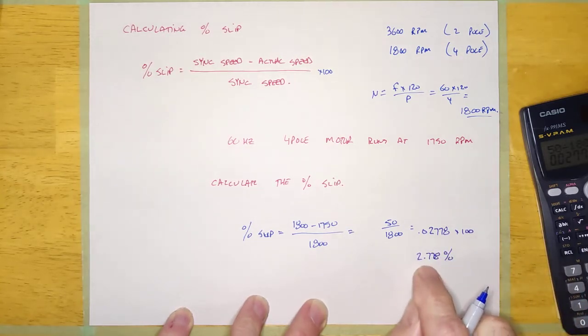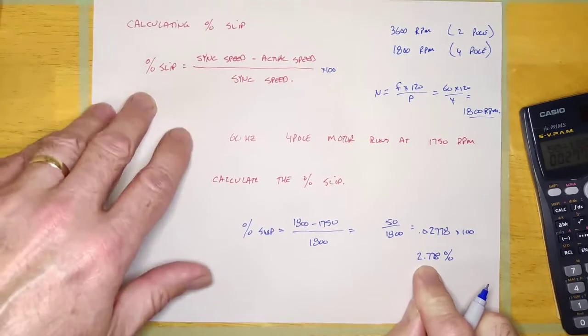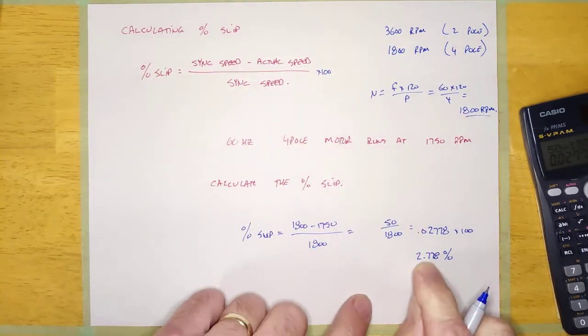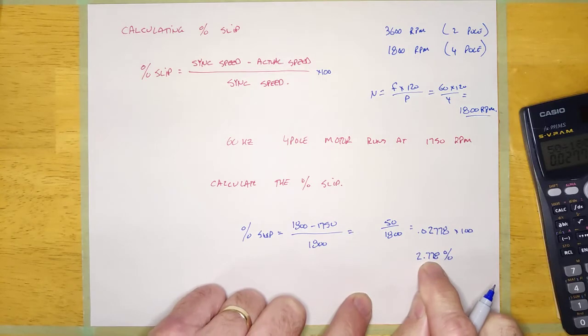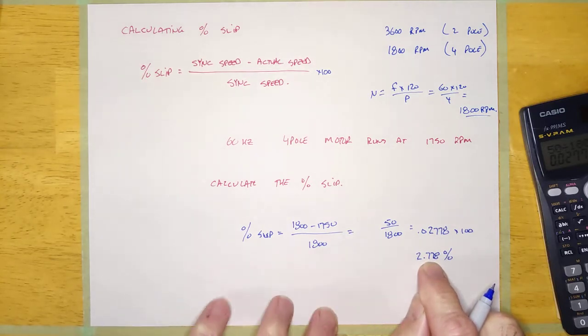And all that is doing is calculating, you know, this particular motor is going to slip 2.778% over its per speed range, basically.